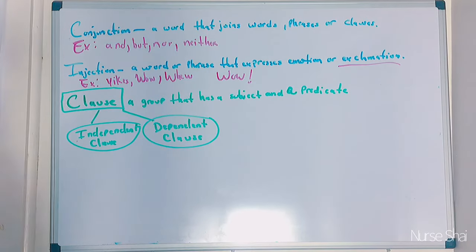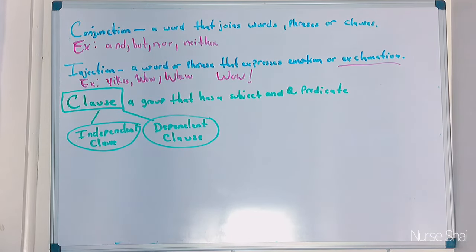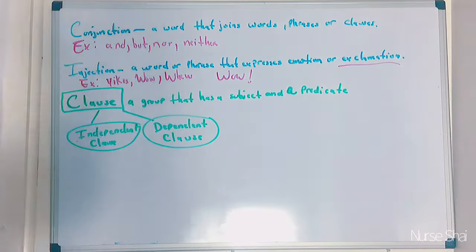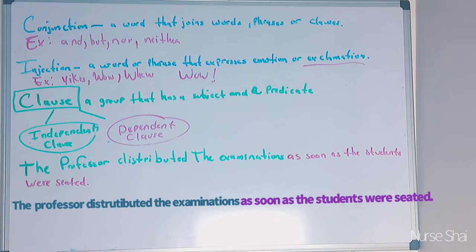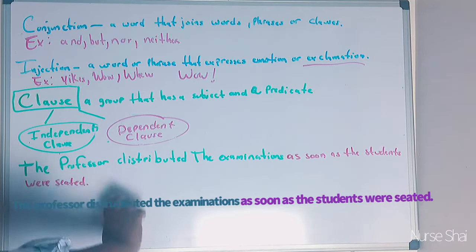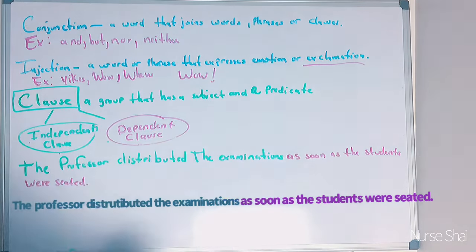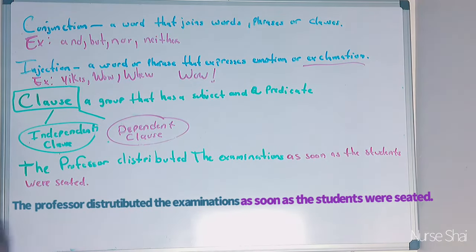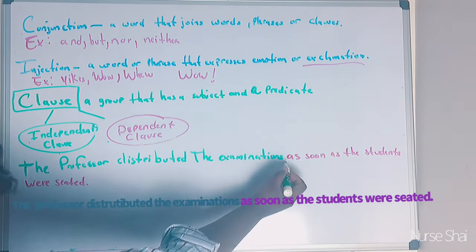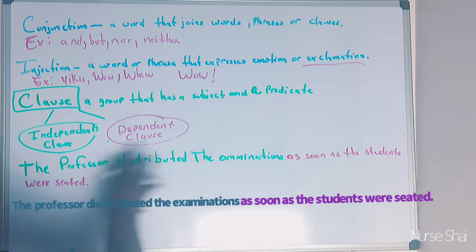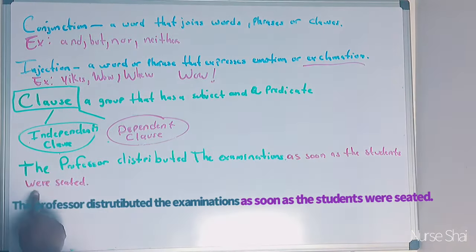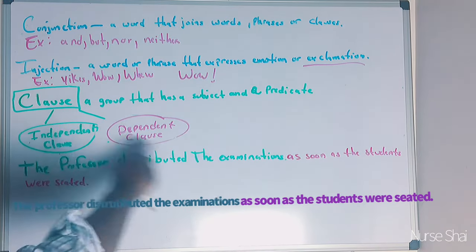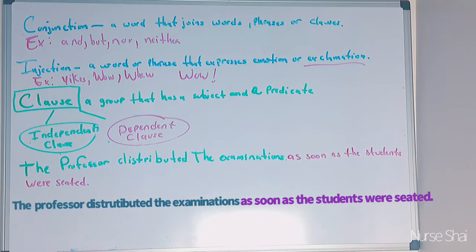Pat yourself on the back if you made it this far. A clause is a group of words that has a subject and a predicate. There are two different types: independent clause and dependent clause. The professor distributed the examinations as soon as the students were seated. The independent clause — 'the professor distributed the examinations' — can stand alone. The dependent clause — 'as soon as the students were seated' — needs the independent sentence to be grammatically correct.